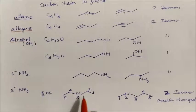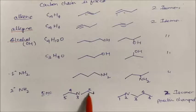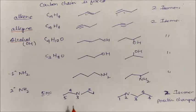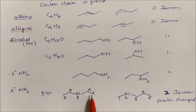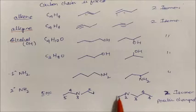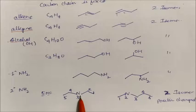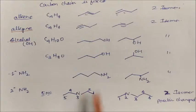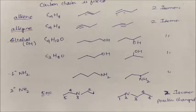For secondary amines you can count different carbon positions — with five carbons and nitrogen, the nitrogen can be at the third position or second position. So these two isomers are also called position isomers due to the change in position of nitrogen.